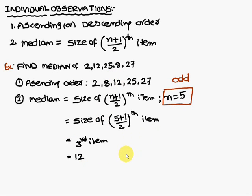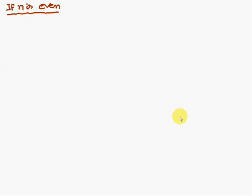Therefore, median is nothing but 12. So here n is equal to 5. We did the problem. That n is equal to 5 means odd. So if it is even, how we have to do the problem? Let us discuss.